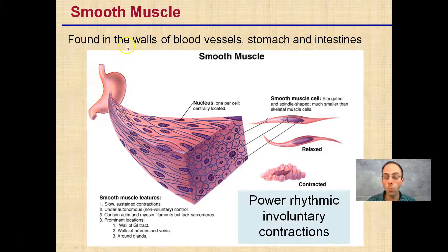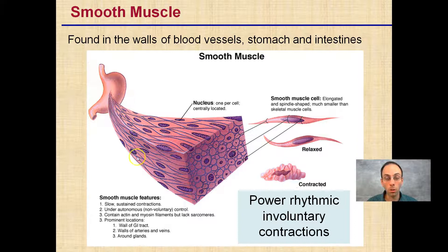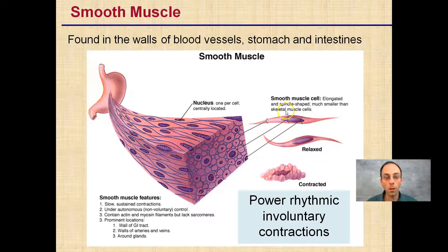So where is smooth muscle found? It's found in the walls of blood vessels, the stomach, and the intestines. If you were to take a cross-section, this is what it would look like. The nucleus is one per cell and centrally located. The smooth muscle cell is an elongated spindle shape, and much smaller than a skeletal muscle cell if you were to compare the two directly.